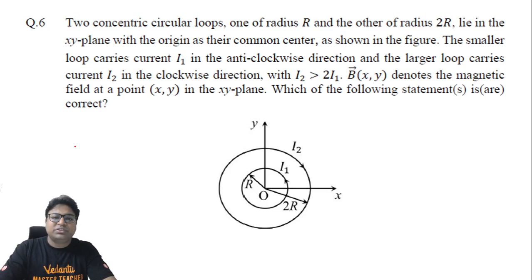Hello friends, this is question number 6 of paper 2 physics 2021 JEE Advanced. In this question there are two loops which are carrying current in opposite sense. The smaller one is carrying current in the anti-clockwise direction and the larger one is carrying current in the clockwise direction.